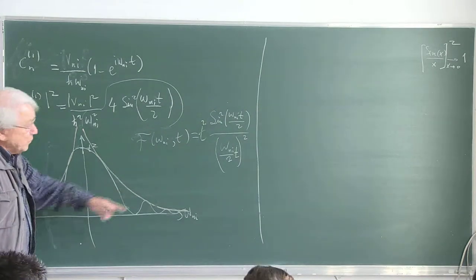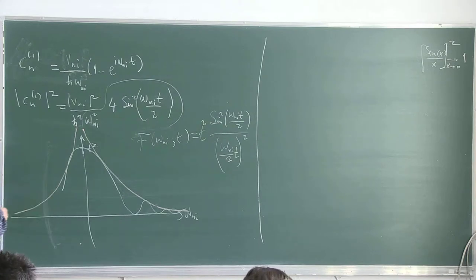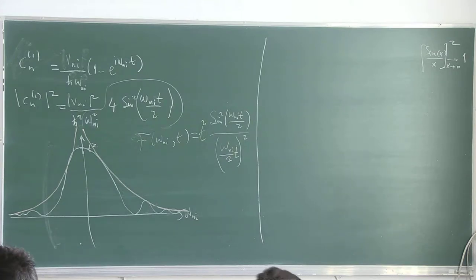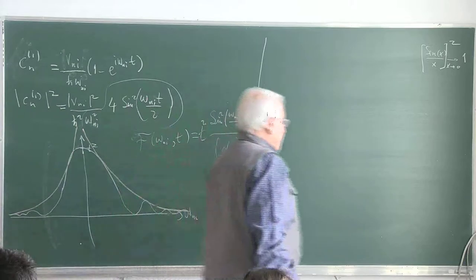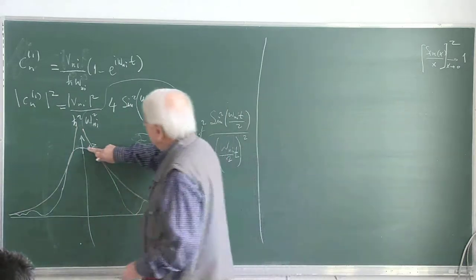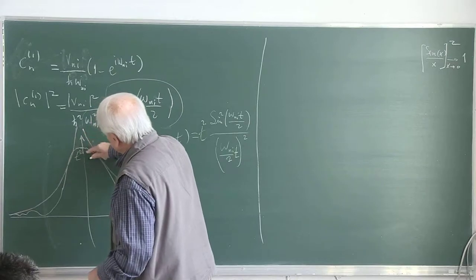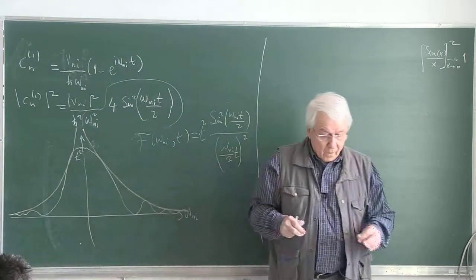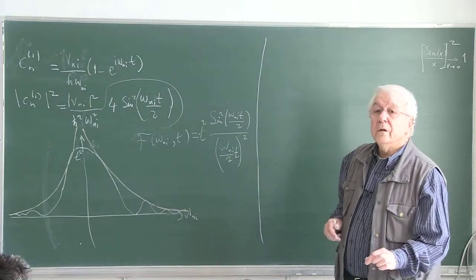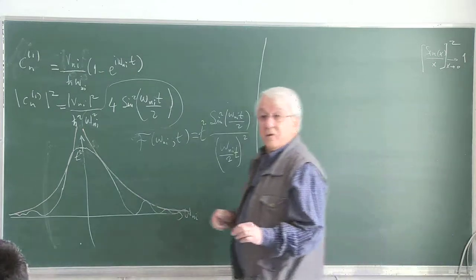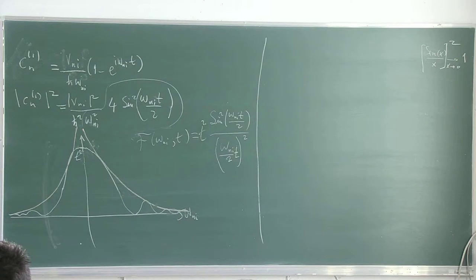What is happening on the right-hand side also happens symmetrically on the left-hand side. It's called the sinc-squared function—sine x over x, or sine² x divided by x².